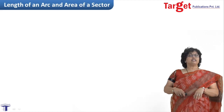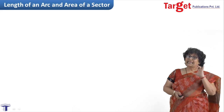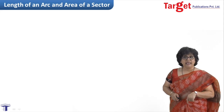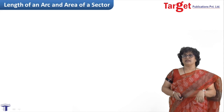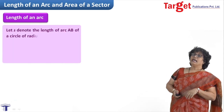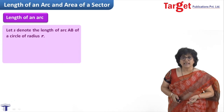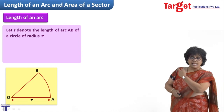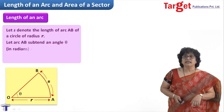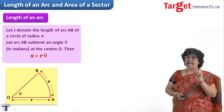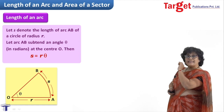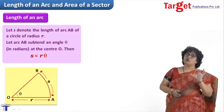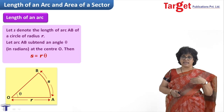You have done in previous classes the length of an arc when the angle is given in degrees. Here we take the length of an arc when the angle is in radians. If the arc length is denoted as s, and the radius of the circle is r, then the length of arc AB is given as s = rθ, where θ is the angle subtended by arc AB at the center O. Please note: θ must be in radians — this formula s = rθ is applicable only when θ is in radians.